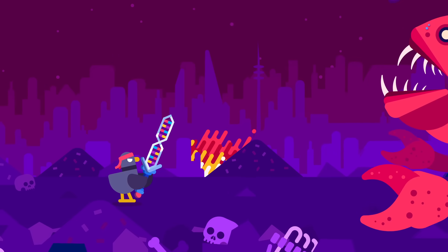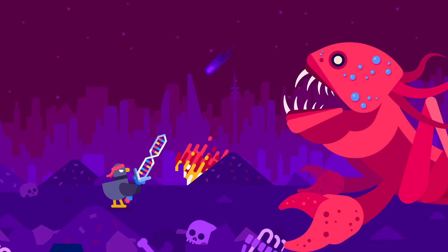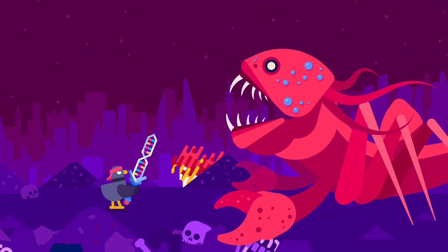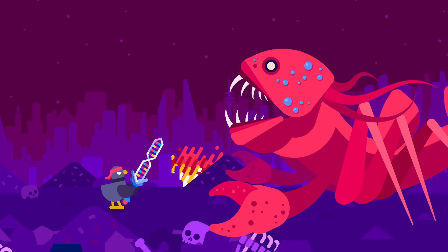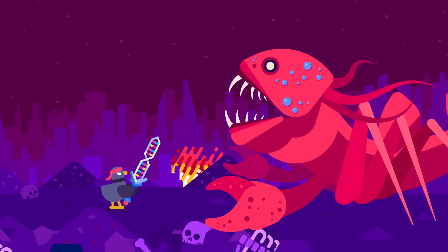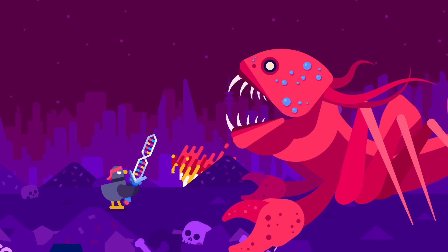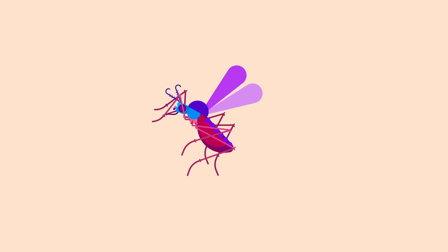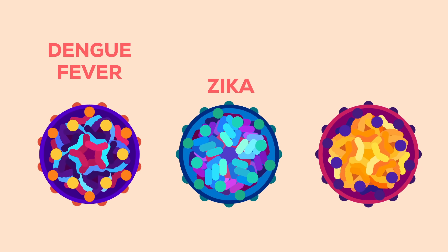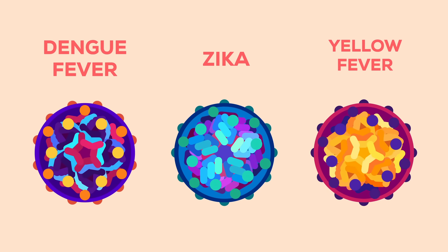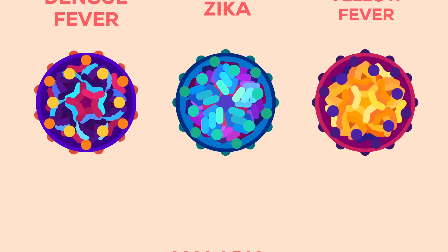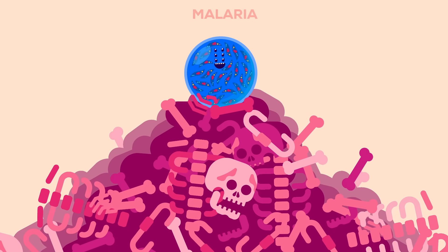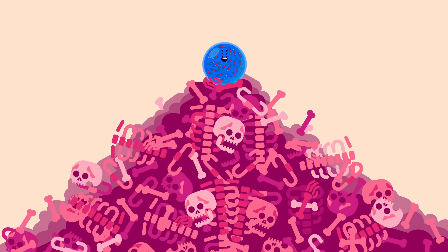What if you could use genetic engineering to stop humanity's most dangerous predator? The deadliest animal on the planet, responsible for the death of billions — the mighty mosquito. Along with other diseases, it plays host to malaria, one of the cruelest parasites on earth, possibly the single biggest killer of humans in history.